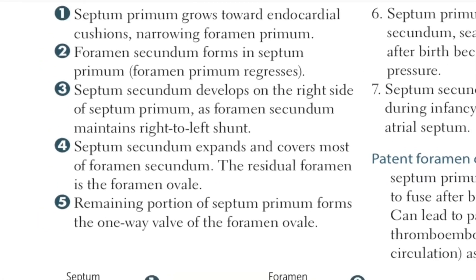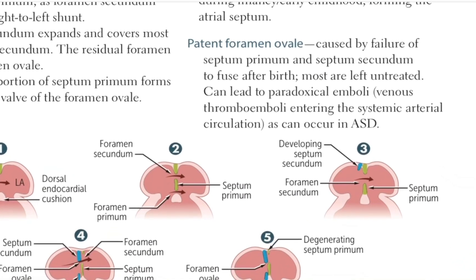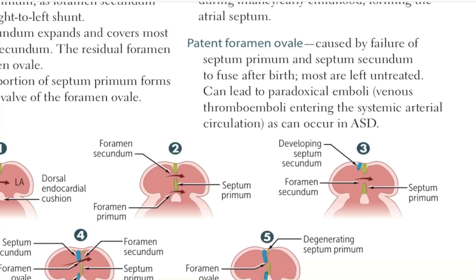In the next step, the foramen secundum forms in the septum primum and the foramen primum regresses — that means the foramen primum disappears eventually. When the septum primum grows towards the endocardial cushion, there is a formation of another foramen called as the foramen secundum. Eventually, the foramen primum regresses and the septum primum is joined to the endocardial cushion.